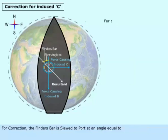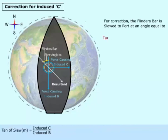For correction, the Flinders bar is slewed to port at an angle equal to: Tangent of slew = Induced Sea over Induced B.